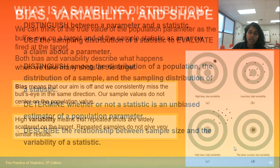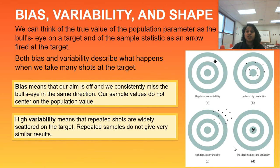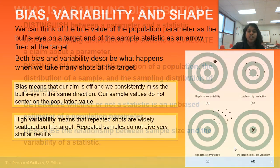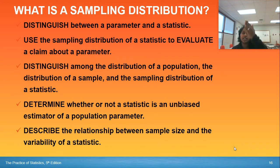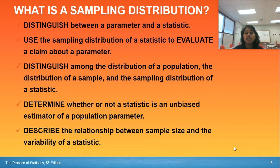These concepts lend themselves to shape, depending on whether you have high bias, low variability, et cetera. As a wrap-up: can you distinguish between a parameter and a statistic? Remember, P for population and parameter, S for statistic and sample. Can you use the sampling distribution of a statistic to evaluate a claim about the parameter? We did that at the very beginning. And can you distinguish amongst the distribution of a population, the distribution of a sample, and the sampling distribution of a statistic?